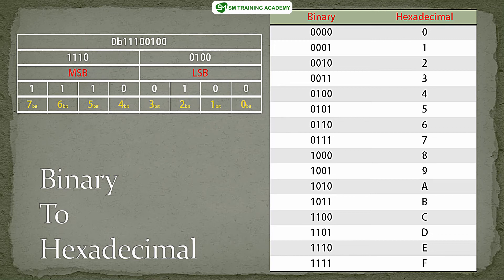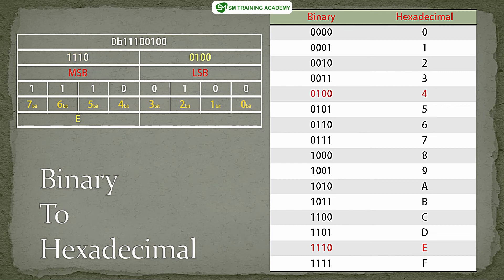After splitting the number into two 4-bit groups, find the hexadecimal equivalent using the table on the right. The MSB nibble 1110 has a hexadecimal equivalent of E, and the LSB nibble 0100 has a hexadecimal equivalent of 4. So the hexadecimal equivalent of the binary number 11100100 is 0xE4. In this manner you can convert any binary format number into its equivalent hexadecimal number using this table.